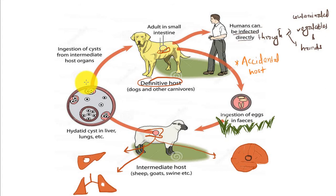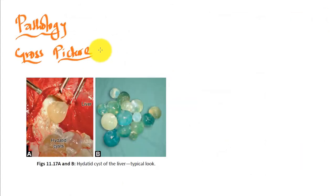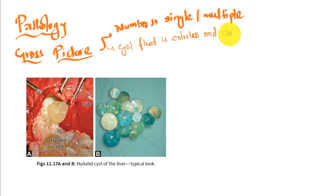Talking about pathology, let's discuss the gross picture. The number is single or multiple, and the cyst fluid is colorless and clear. It becomes bilious if there is any communication with the bile ducts. These are the hydatid cysts of the liver with typical look.